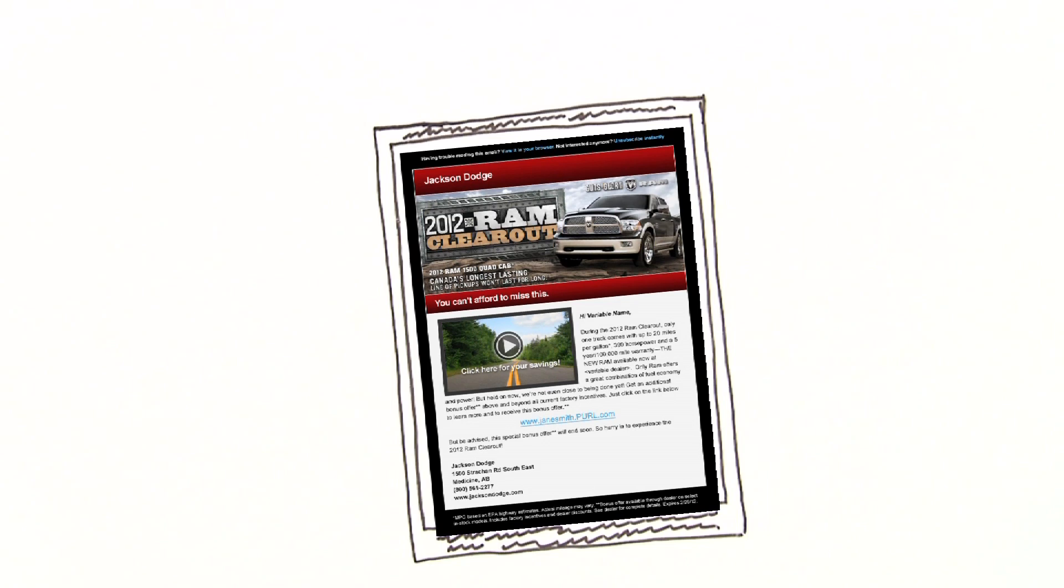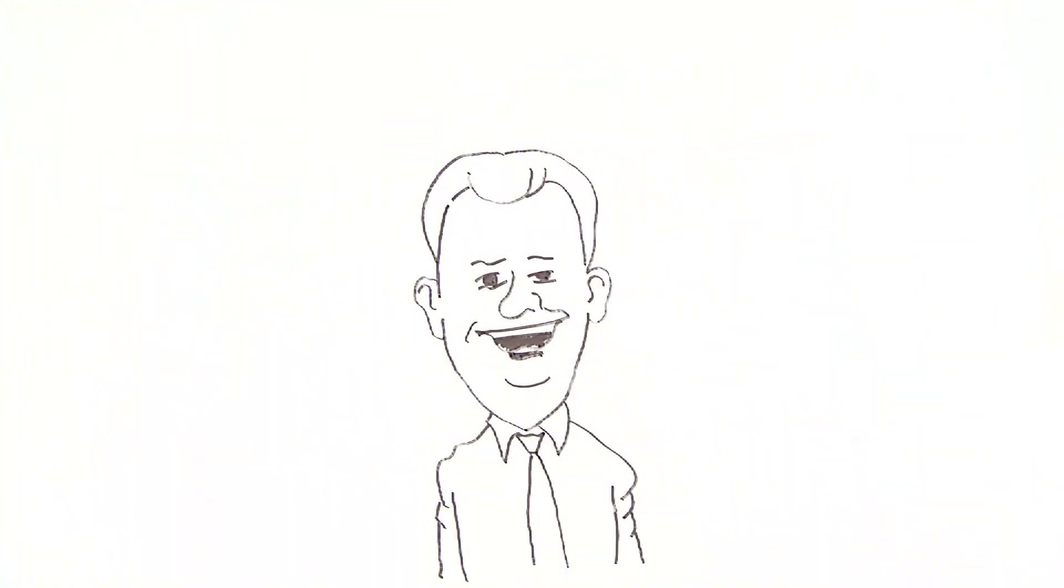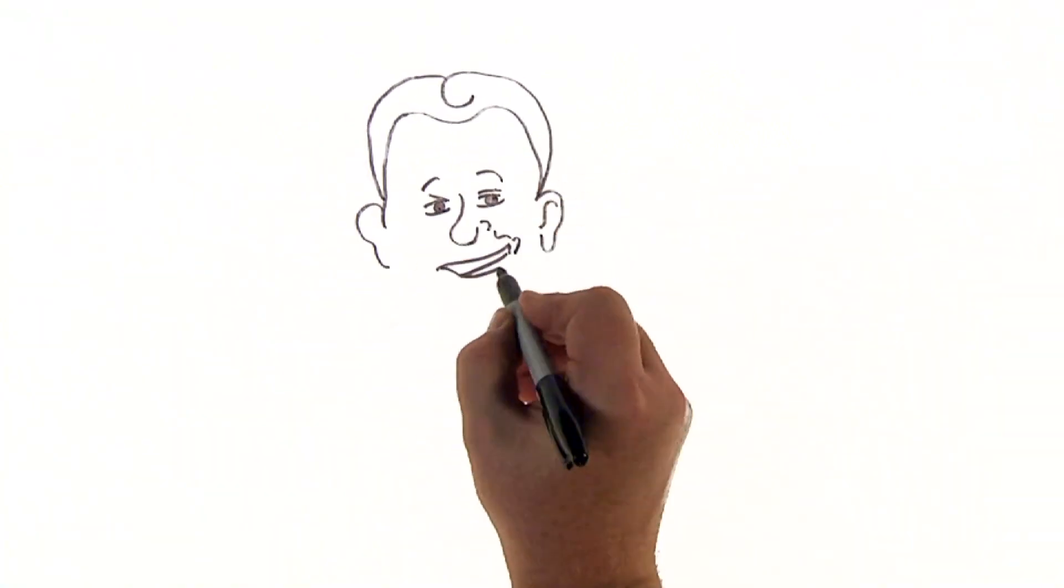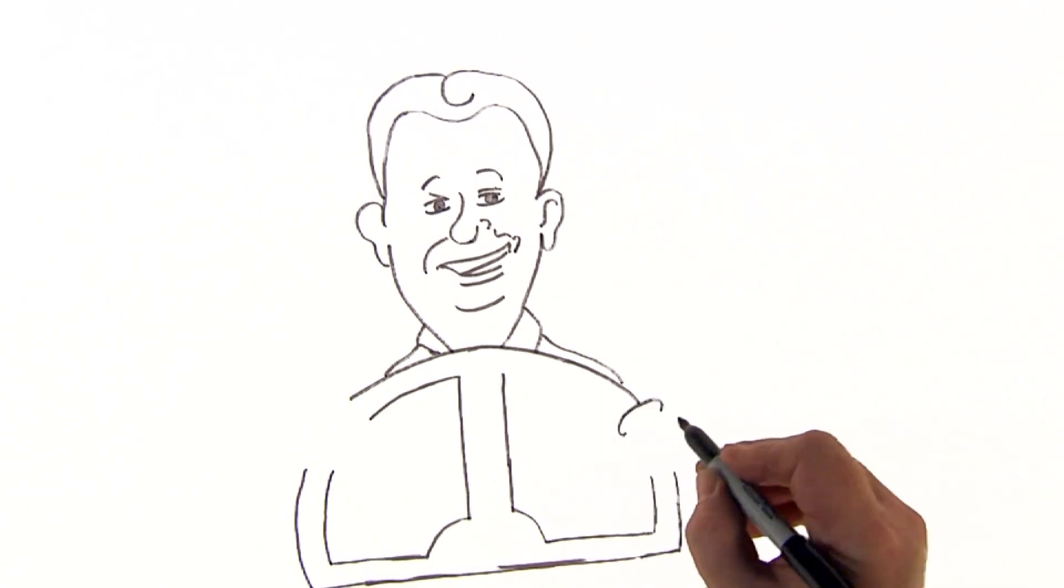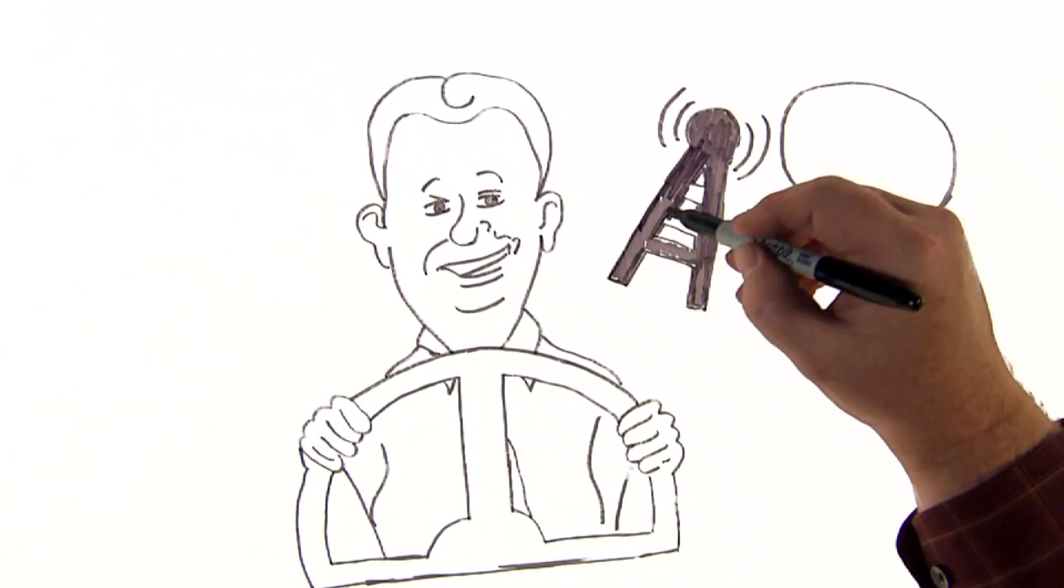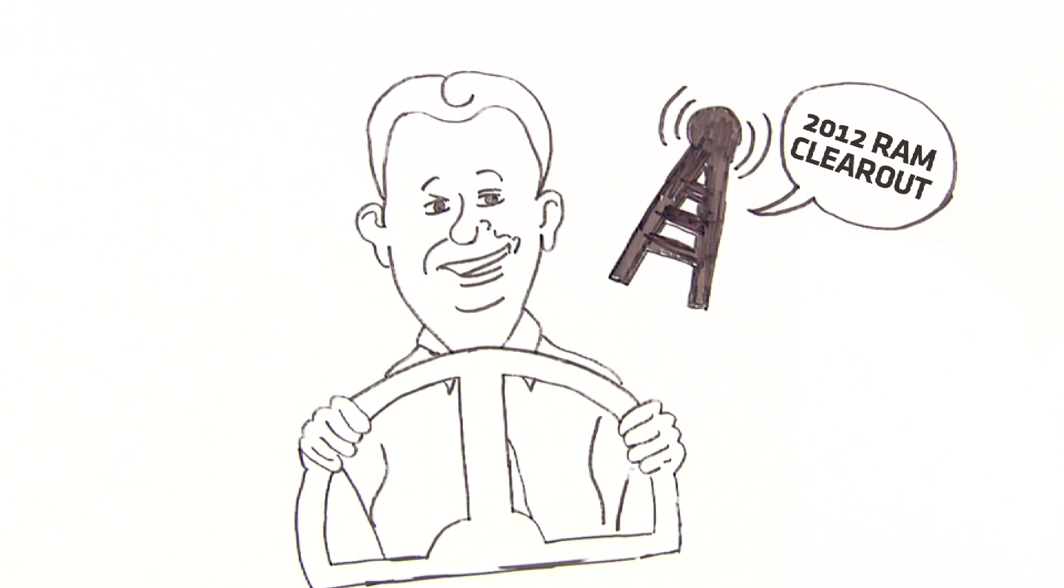Not ready to make any moves, he moves on through his day. Kevin's wife kisses him goodbye and he heads off to work. On the way to work, a radio message from the local dealer reinforces the email content seen earlier on his iPhone. The 2012 Ram All-Out Clearout of Jackson Dodge is almost over.